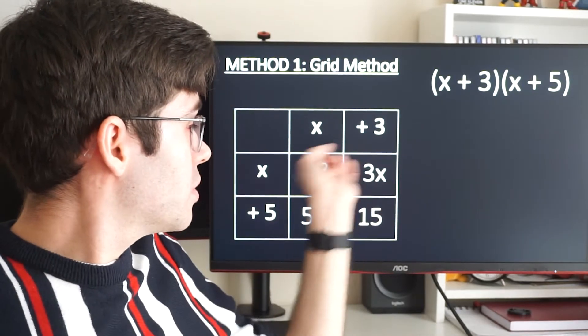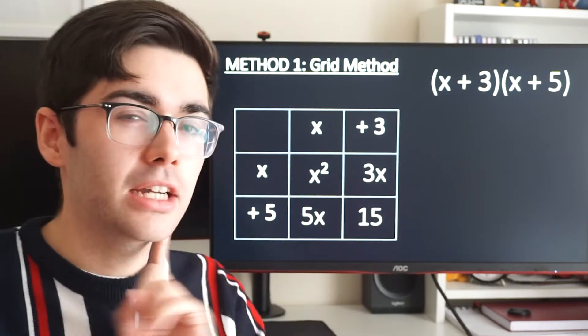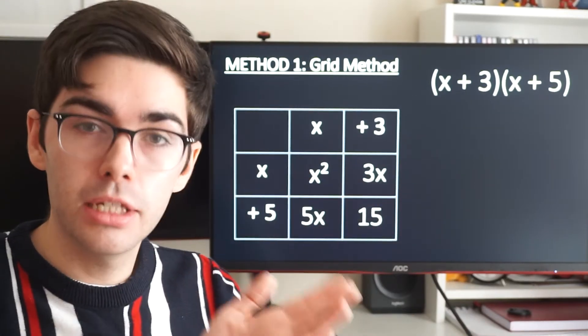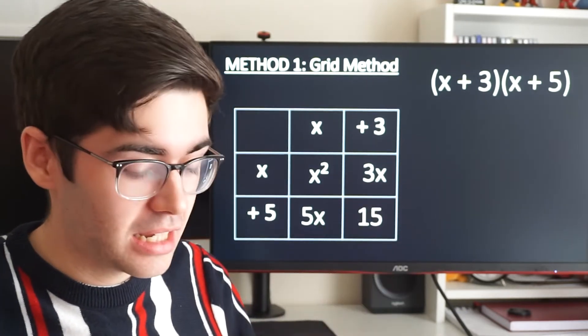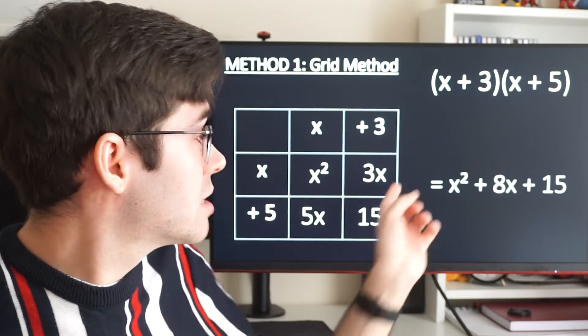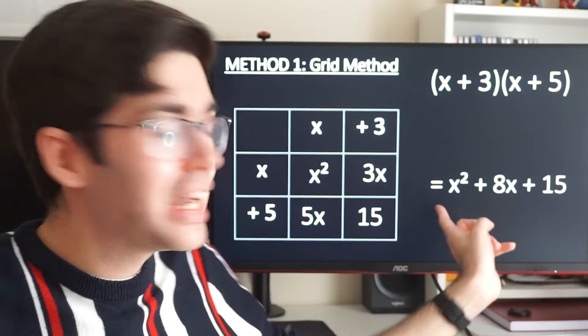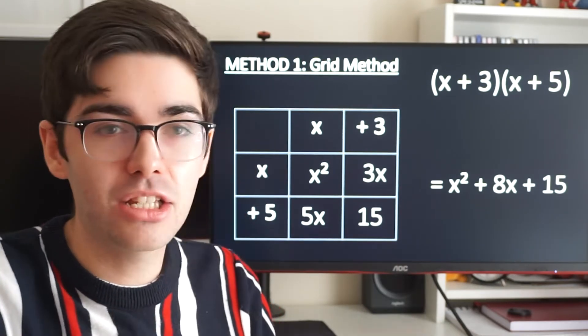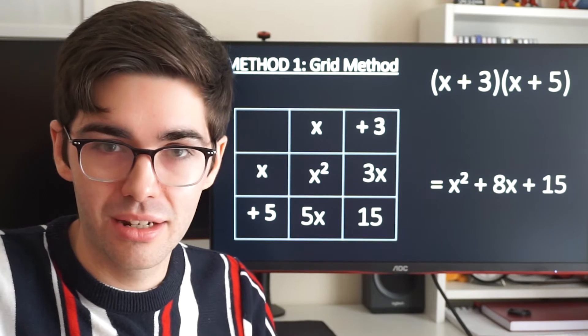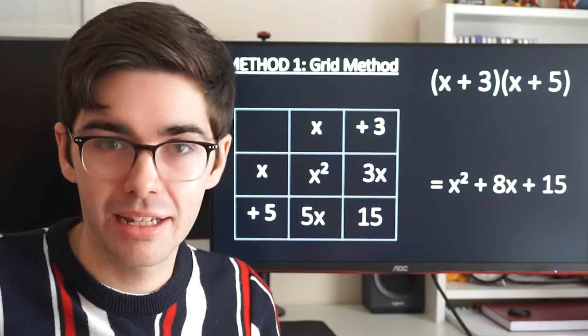Then I need to add all of those things together. x squared is by itself. 3x and 5x, can we combine those? Yes, we can. We get 8x, very good. And then 15 is by itself. So our answer is going to look like this: x squared plus 8x plus 15. And this is what we call our quadratic equation. They always look like this: x squared, x, and a number on the end. That's how we recognize them, and that's what we get when we expand double brackets.